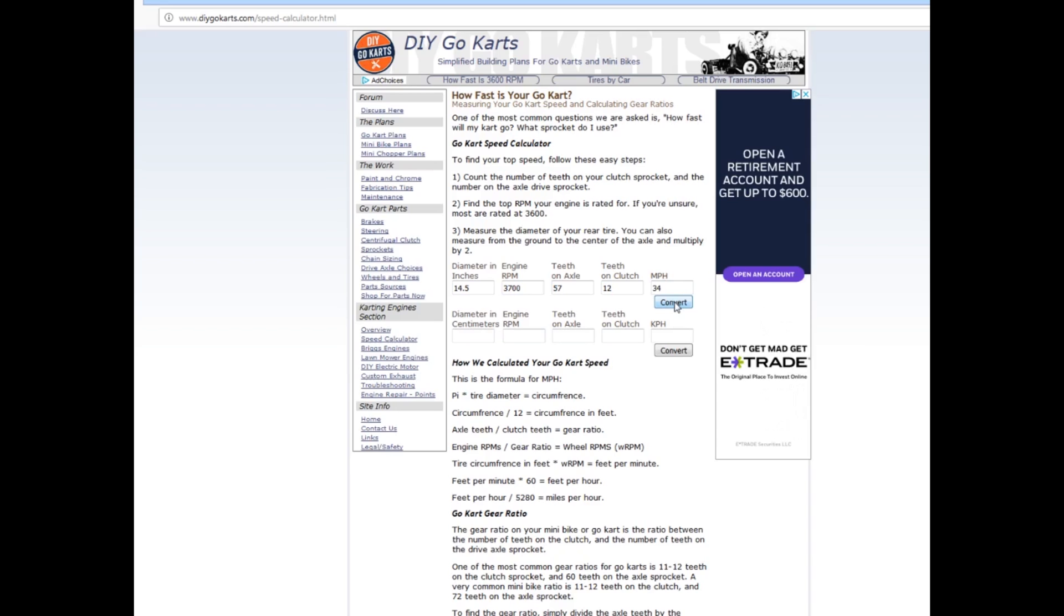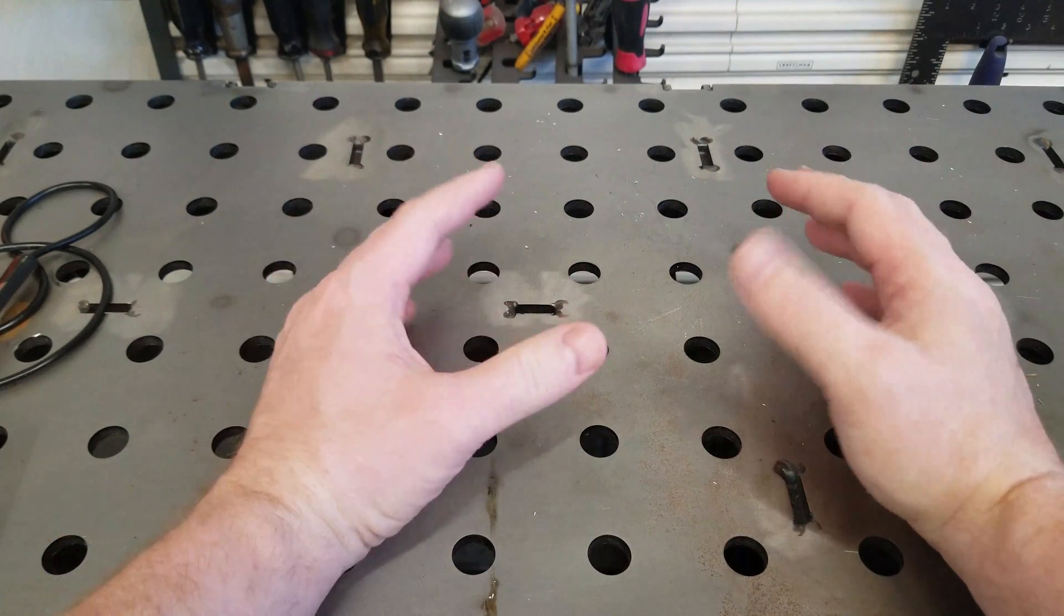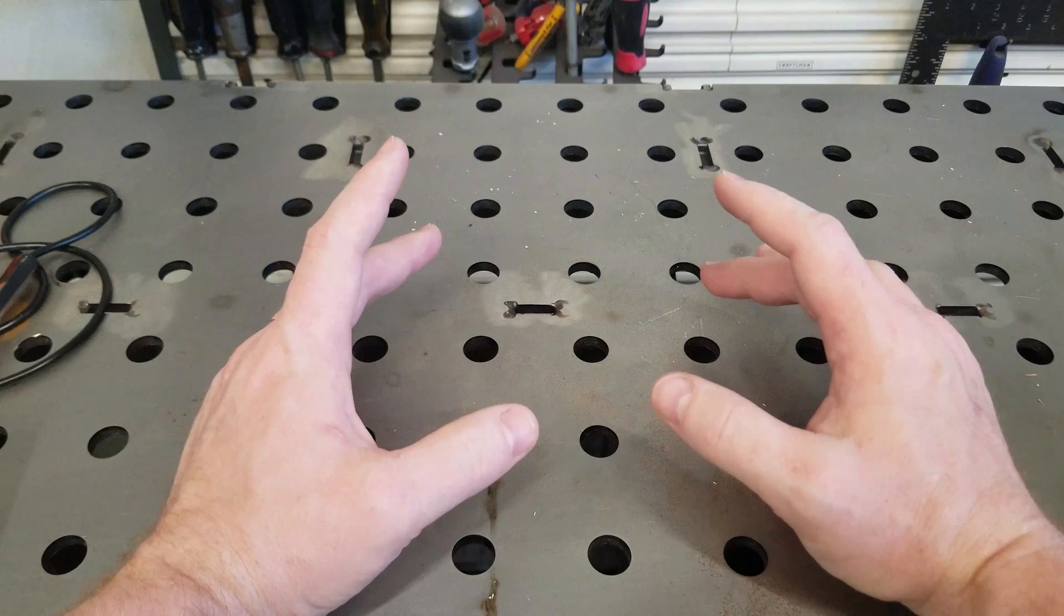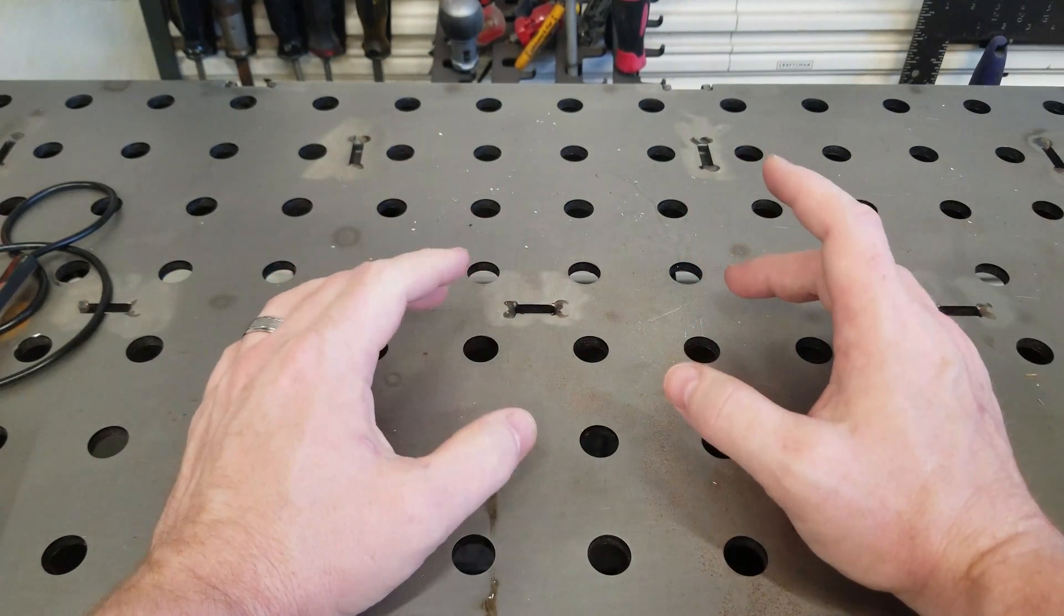Pretty simple. So you can input on this calculator, whatever your sprocket sizes are and wheel diameter. And either see what your engine RPM is at a given mile per hour, if you know that, or if you know what your engine RPM is, you can even guess to see what your miles per hour are going to be. So hopefully this video hasn't been too boring for you guys. It is math, I know it sucks, but it's good to know, especially if you're building a mini bike or a go-kart or something for a younger individual.